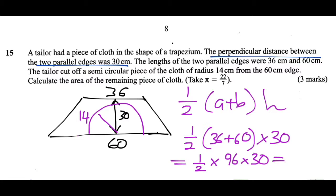we get 1440 centimeters squared for the area of the trapezium shaped cloth before the semicircular piece is cut out of it.